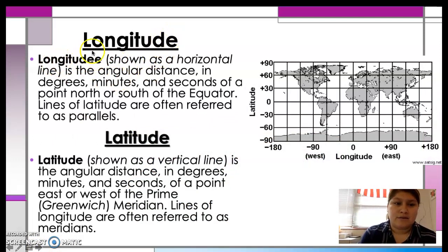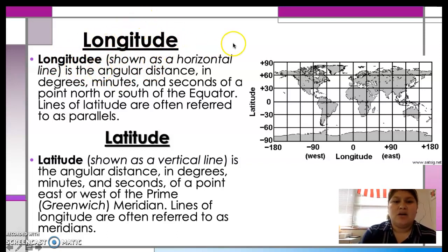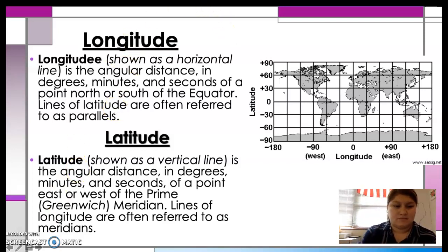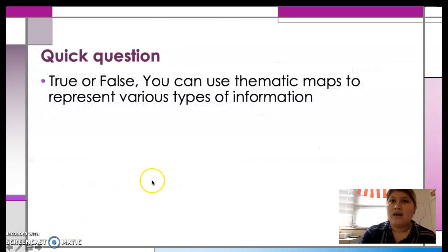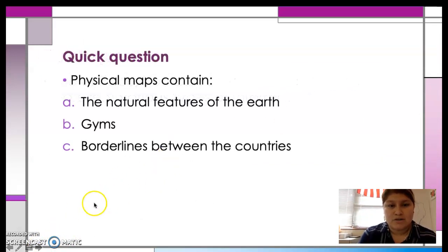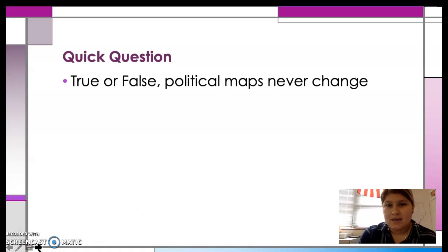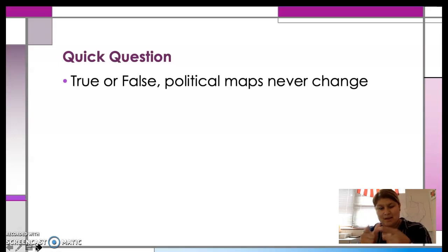Longitude — my bad, I got hyper and put an extra E, but it's spelled longitude. Longitude is horizontal. Latitude is vertical. That's how I tell the difference — one goes like this, one goes like this. Here's your DOL question number one, DOL question number two, DOL question number three, and your last one for the day. Get those answered. If you need to rewind the video to answer the others, do that. Push pause, get them done. I'll see you guys tomorrow.